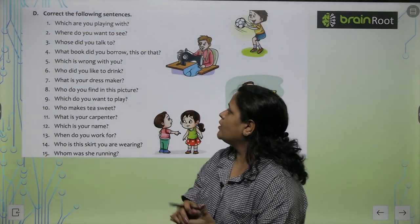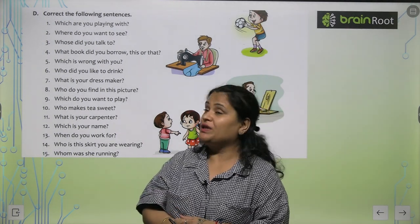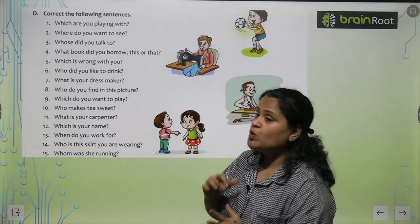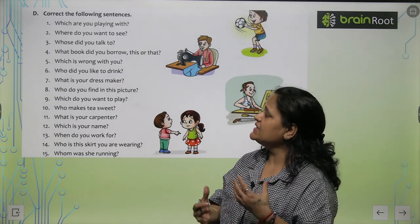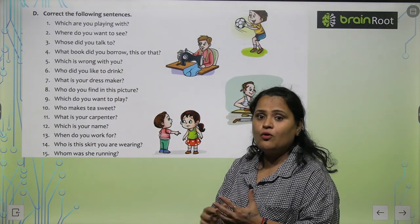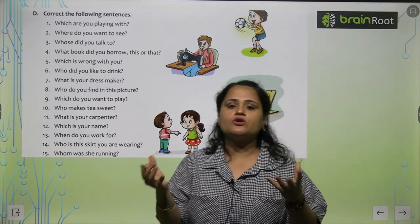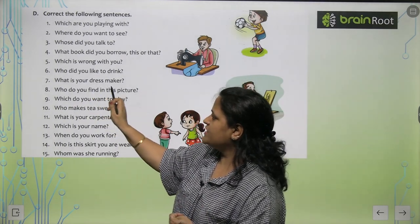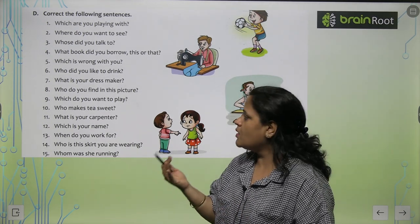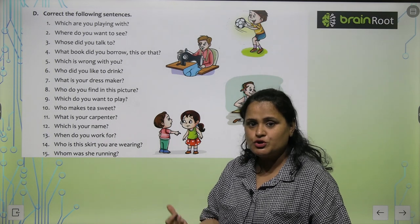The next exercise is to correct the following sentences using the correct interrogative pronoun. 'Which are you playing with?' — No. Correct answer: 'Whom are you playing with?' 'Whose did you talk to?' — No. Correct: 'Whom did you talk to?' 'Which is wrong with you?' — Incorrect. Correct: 'What is wrong with you?' 'What is your dressmaker?' — Correct: 'Who is your dressmaker?' 'Which do you want to play?' — Correct: 'What do you want to play?'